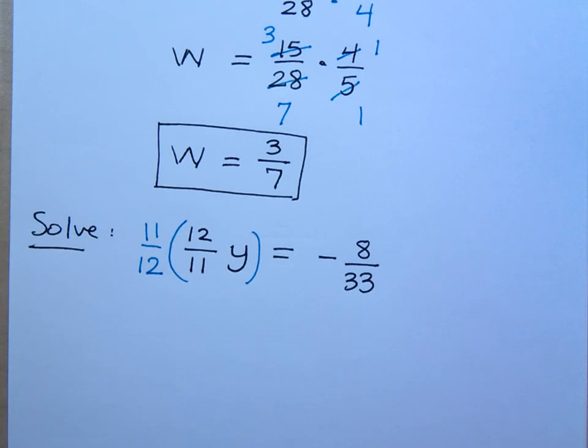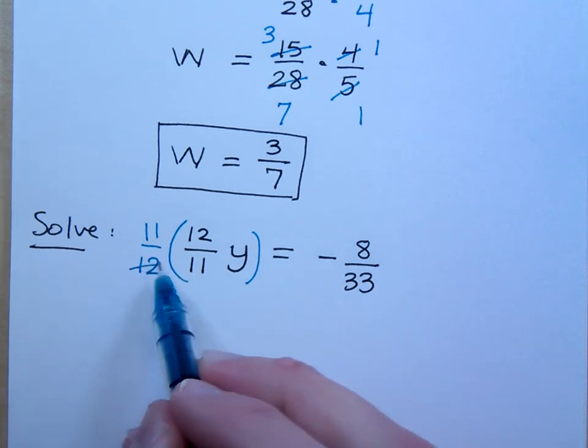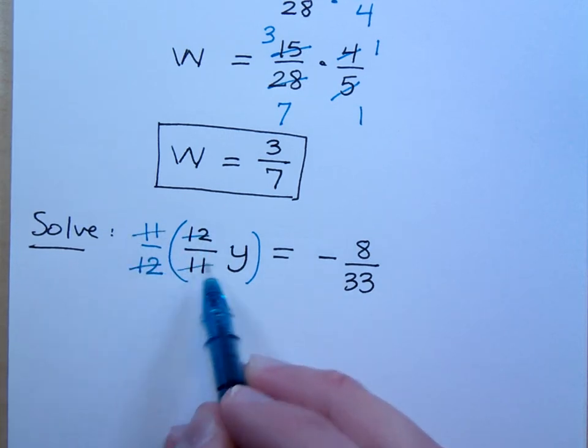When we talked about reciprocals, a fraction times its reciprocal gives you what? No, a fraction times its reciprocal gives you 1. Right? Look. Won't the 12s reduce away and the 11s reduce, so you just have 1.